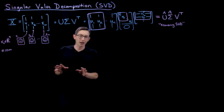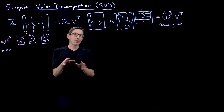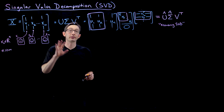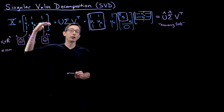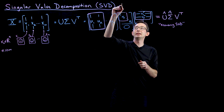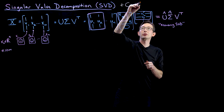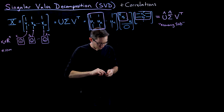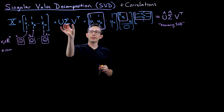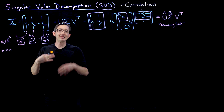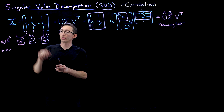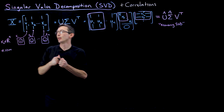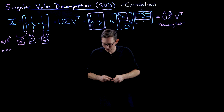Welcome back. We're talking about the SVD, and now I want to tell you one of the most useful interpretations of the SVD in terms of correlations among the columns of X and correlations among the rows of X. You can think of the U and V matrices from the SVD as eigenvectors of a correlation matrix given by X times X transpose or X transpose times X.